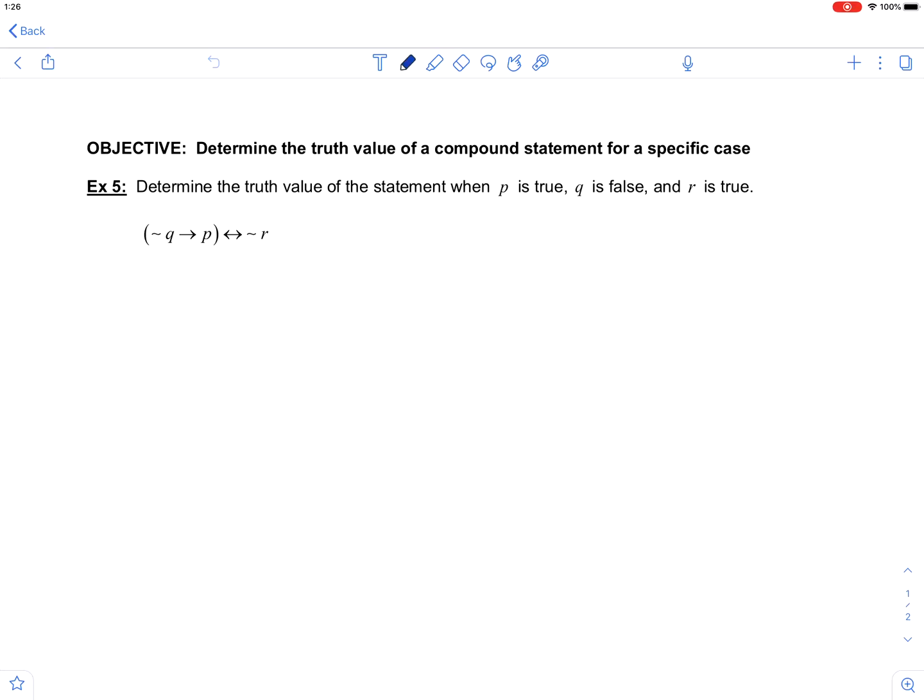Note that you do not have to construct an entire truth table if you are only looking at a specific case. We're looking at when P is true, Q is false, and R is true. That is given to us.